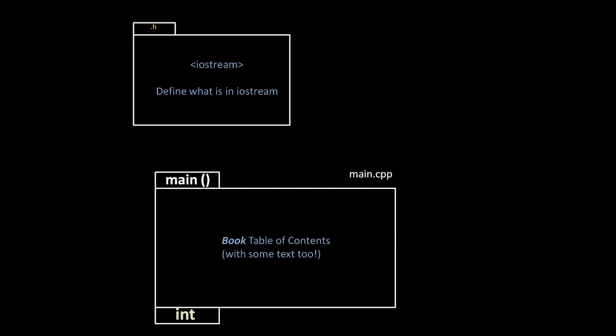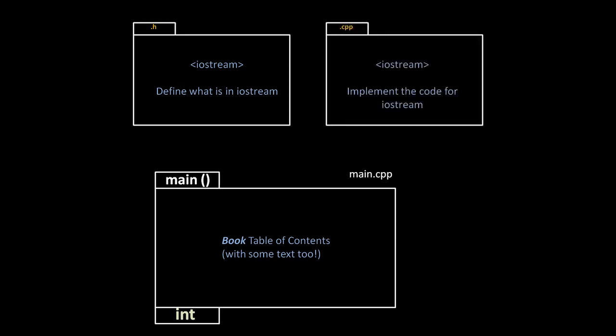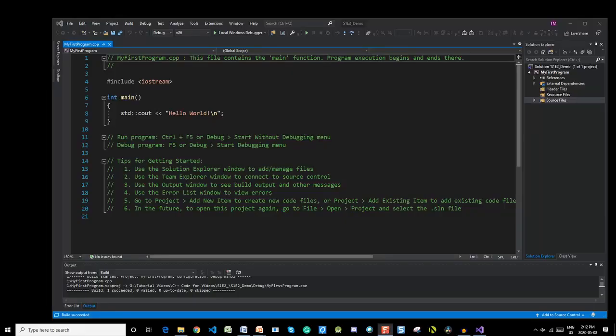The include directive makes the compiler insert the contents of the file iostream into the program before it's compiled. This file is called a header file because it's usually brought in at the beginning of a project. This particular header file contains definitions or other source code that are necessary for you to be able to use input and output statements in your program. For example, it lets the user of your application type information into your application. For now, think of the pound include as a library membership card — it is a bridge that connects other files to your current code.